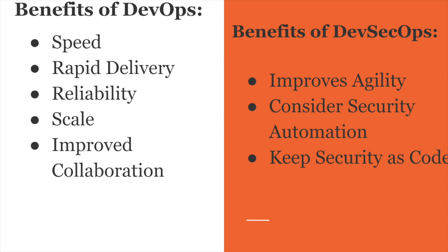In DevSecOps, there is no separate person working on security after production or after development. The security expert works within the development process, as part of the development team. The key thing is that security works as code — automated tools and APIs analyze your code, find problems, and find vulnerabilities. The core concept is security as code.